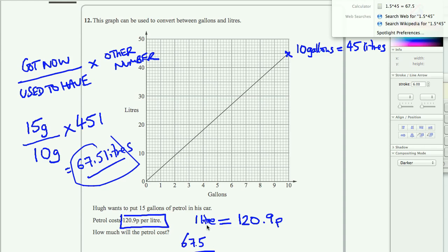Divided by, well, actually before in the exchange rate we only had 1. So divided by 1. Then we times by the other number, which is 120.9 p.